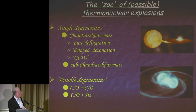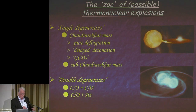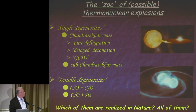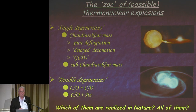We heard about all these kinds of progenitors: the single degenerates that come at Chandrasekhar mass—usually pure deflagration, delayed detonations, gravitationally confined detonations, sub-Chandras, and so on; there are lots of them. The double degenerates could be two white dwarfs, CO, or one CO and a helium white dwarf. The question is which of them are realized in nature, and I will argue that I believe all of them.